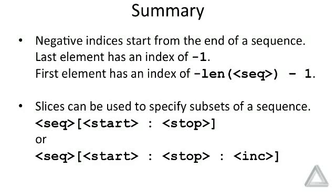We can use either positive or negative indexing for the start and stop values. Or we could have a three integer form, where we have a start, a stop, and an increment value. And again, these are all separated by colons.